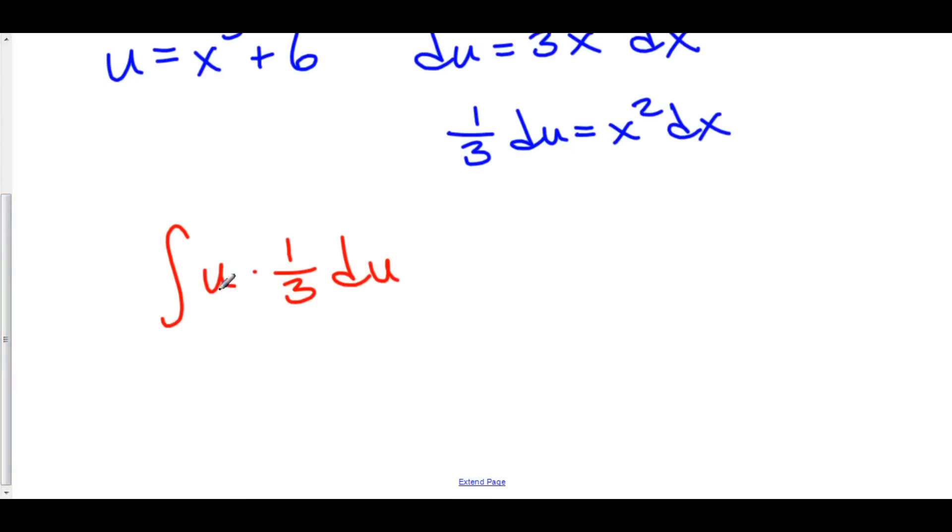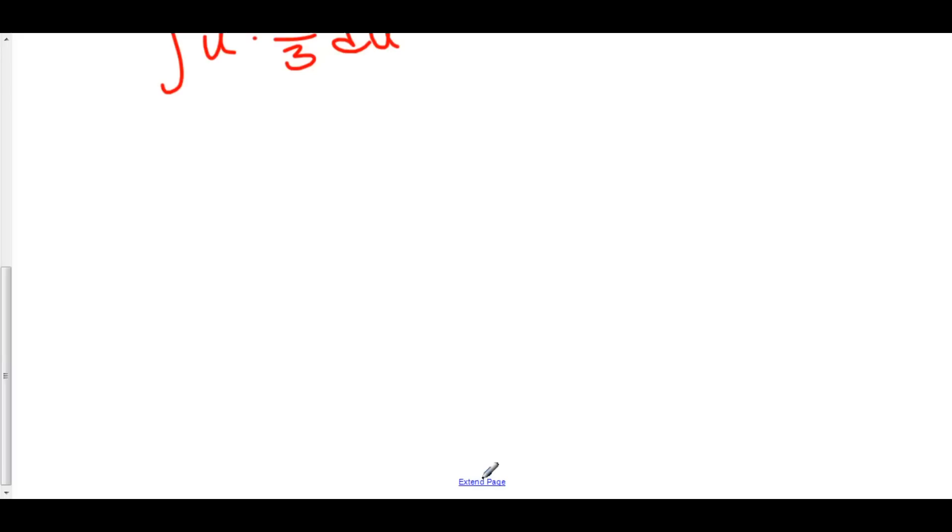This is much easier. Look at this. We have 1 third u du. That's way easier to take the integral of. And, of course, we can use constant rules. So, we can take this 1 third out of the integral to make it even easier.